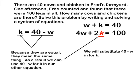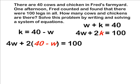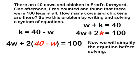Using parentheses, we write 40 minus w where the letter k was in our second equation. Now you should notice we only have one variable, which is w, and that allows us to isolate that variable and figure out its value.